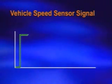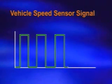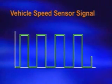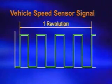The sensor generates four pulses with one rotation. The ECM calculates the vehicle speed by counting the number of pulses per second.